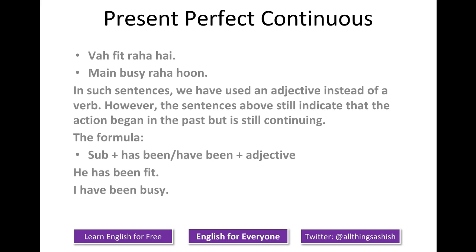Another aspect of present perfect continuous is that sometimes, instead of a main verb, we use an adjective. For example: 'Va fit raha hai' or 'may busy raha hai'. The formula for such sentences is that you replace the V4 with an adjective: subject plus 'has been' or 'have been' plus adjective. So the above sentences can be translated as: he has been fit, and I have been busy.